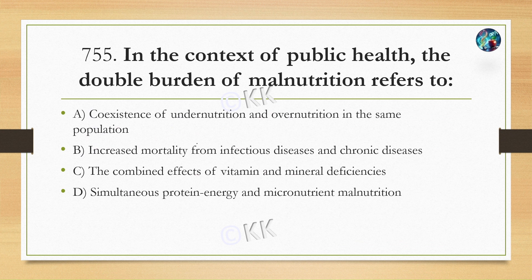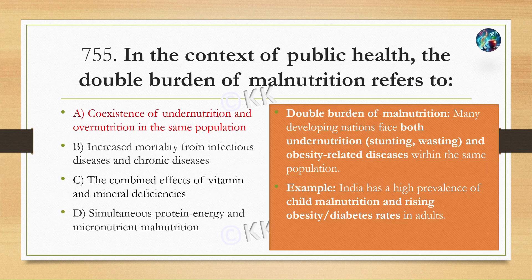In the context of public health, the double burden of malnutrition refers to: Option A: Co-existence of undernutrition and overnutrition in the same population, Option B: Increased mortality from infectious and chronic diseases, Option C: Combined effect of vitamin and mineral deficiency, Option D: Simultaneous protein-energy and macronutrient malnutrition. The correct answer is Option A. The double burden of malnutrition is generally seen more in developing countries, where both undernutrition (stunting and wasting) and obesity-related diseases coexist — for example, in India where malnutrition and rising obesity and diabetes are seen together.